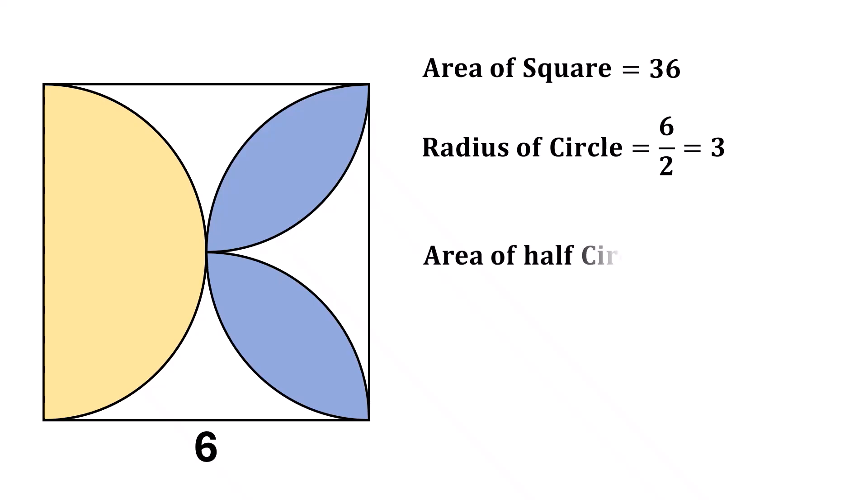So the area of this half circle is half of pi times r squared. Using the radius, we get half times pi times 3 squared. Simplifying this, we have 9 pi over 2.